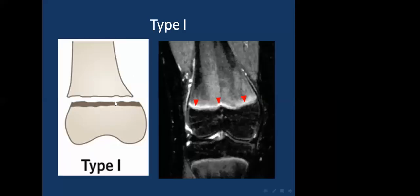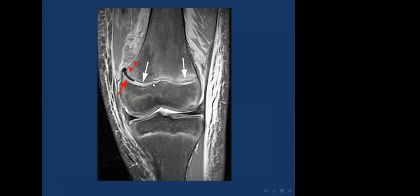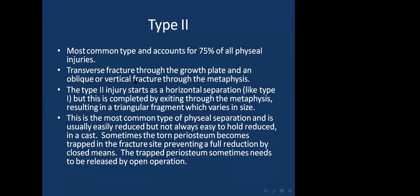Type 1 fracture shows separation of the growth plate. The X-ray can be normal, but MRI shows high signal intensity with compression of the growth plate. Type 2 fractures are the most common, accounting for 75% of all physeal injuries. They consist of a transverse fracture through the growth plate and an oblique or vertical fracture through the metaphysis, resulting in a triangular metaphyseal fragment.